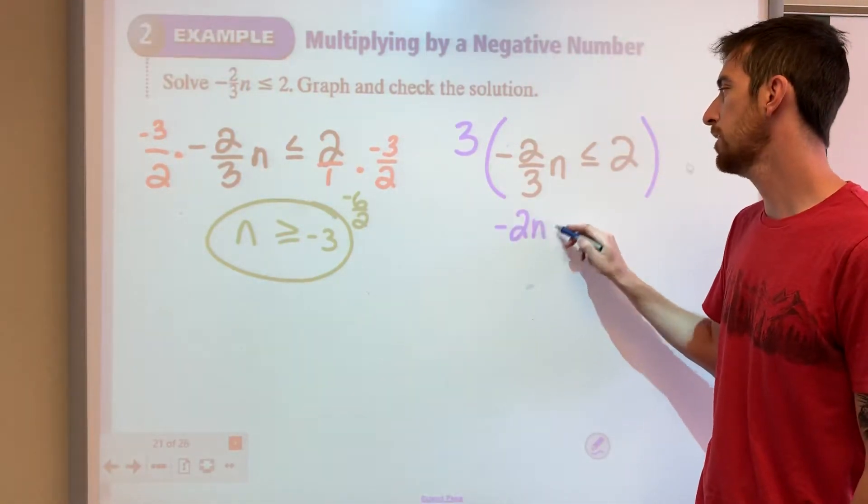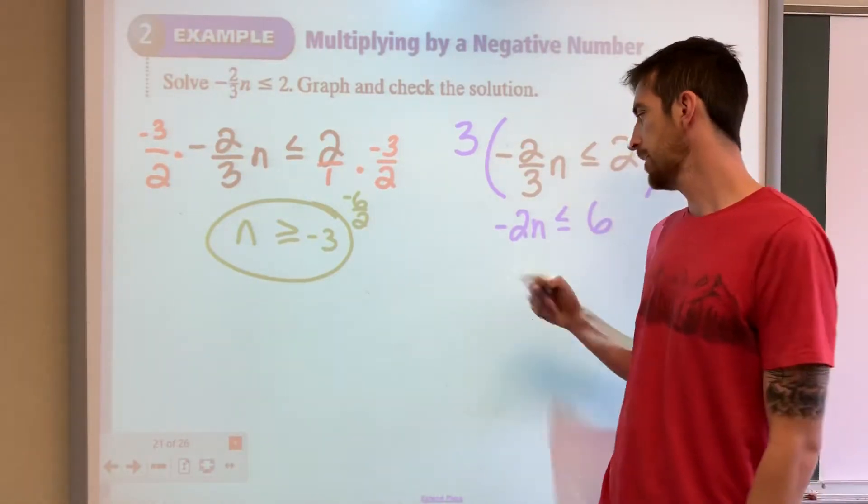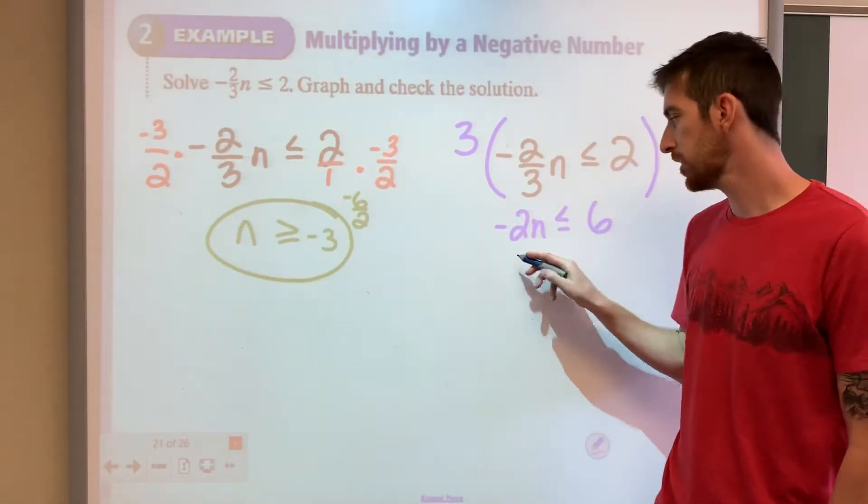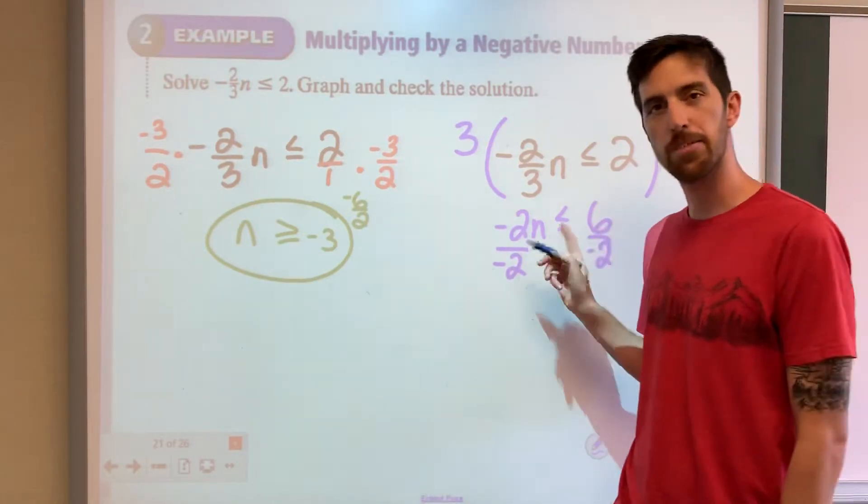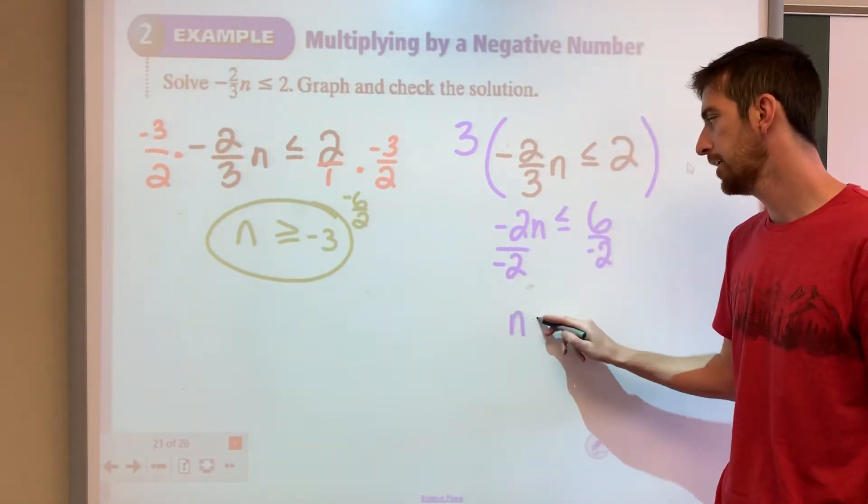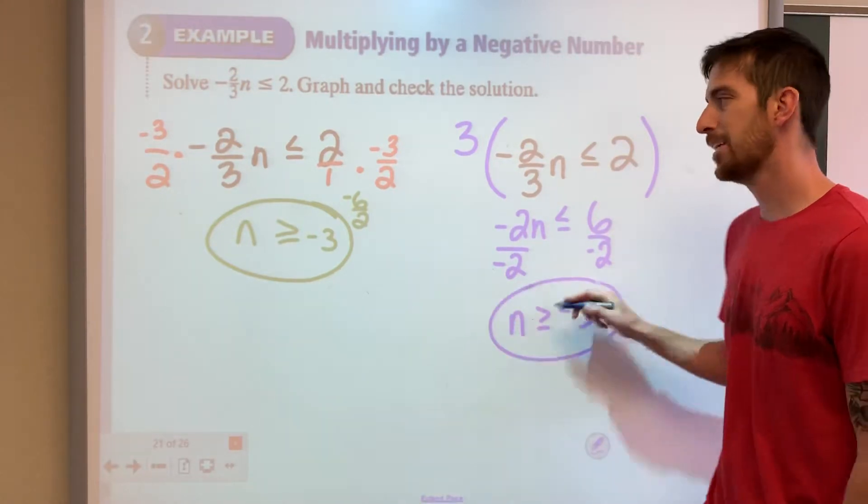So we'd have negative 2N over here, and then 3 times 2 is 6. Negative 2N is less than or equal to 6. Divide both sides by negative 2. Remembering to flip that inequality, you get N is greater than or equal to negative 3. Same answer.